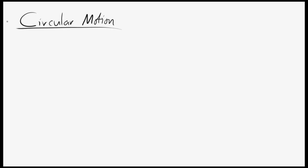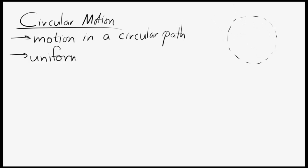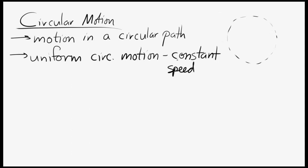Today we're going to look at circular motion. In circular motion we have an object that's traveling around in a circle — not in ellipses or ovals, just circles. We're often going to look at something called uniform circular motion. That's a special case where the object is traveling at a constant speed around the circle. It's not speeding up and it's not slowing down.